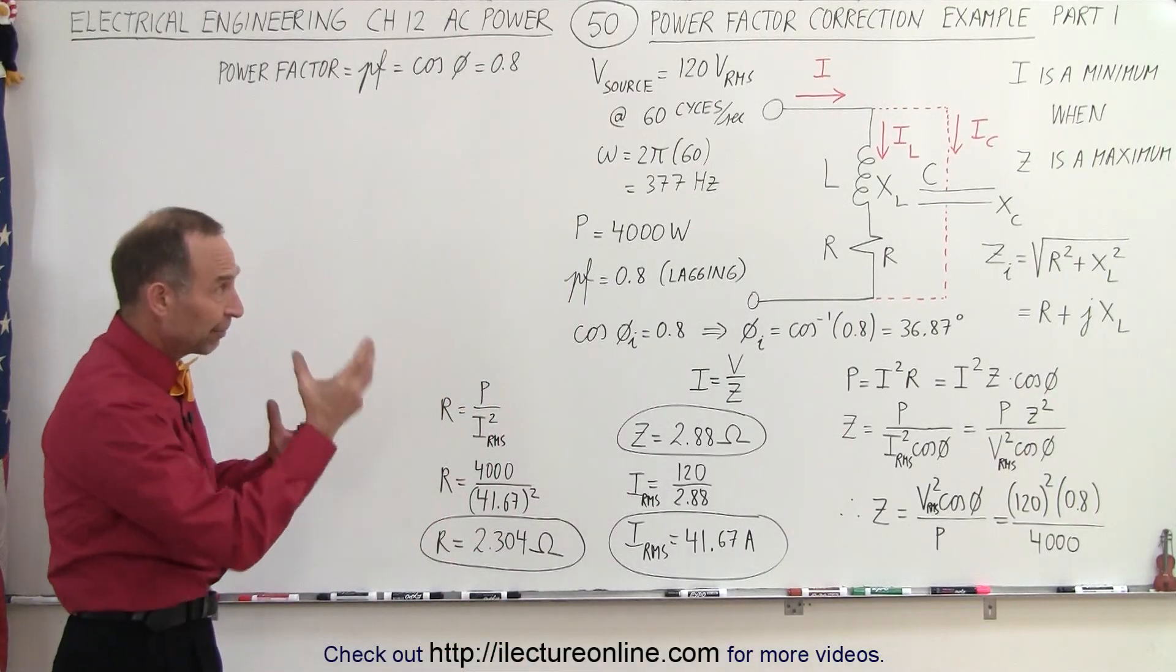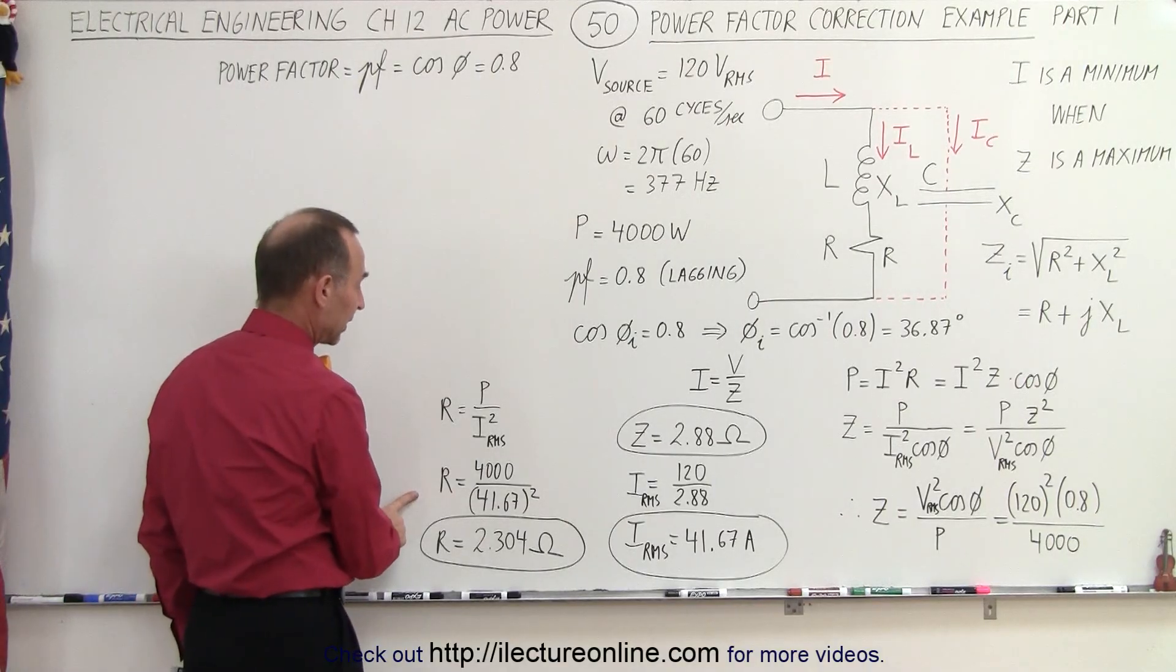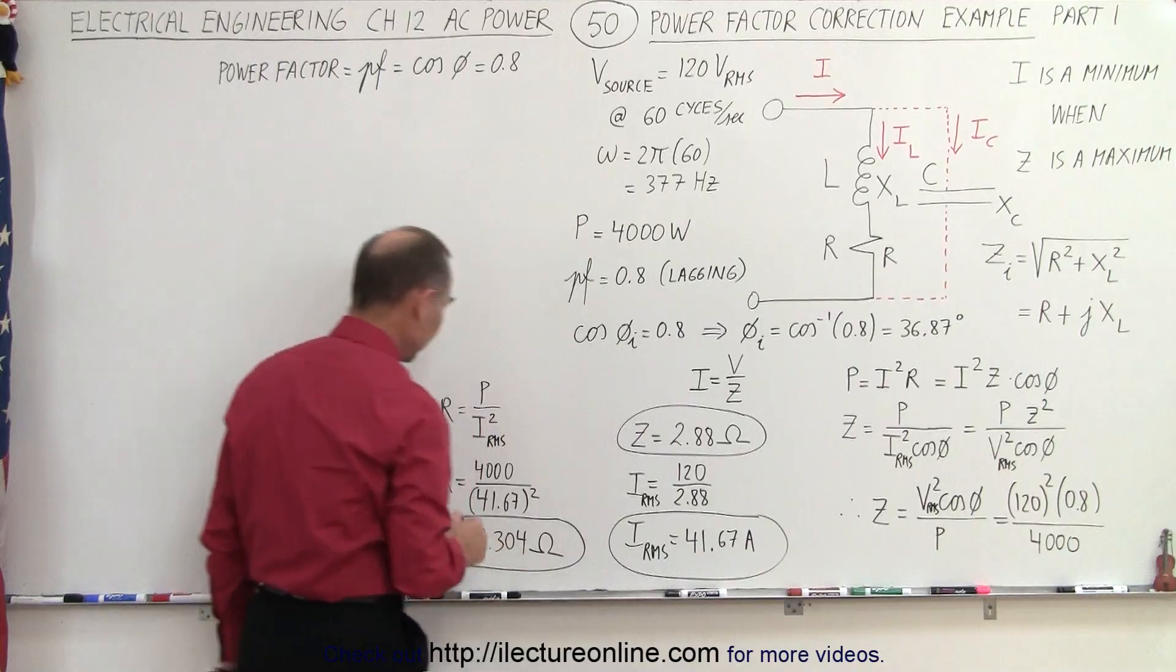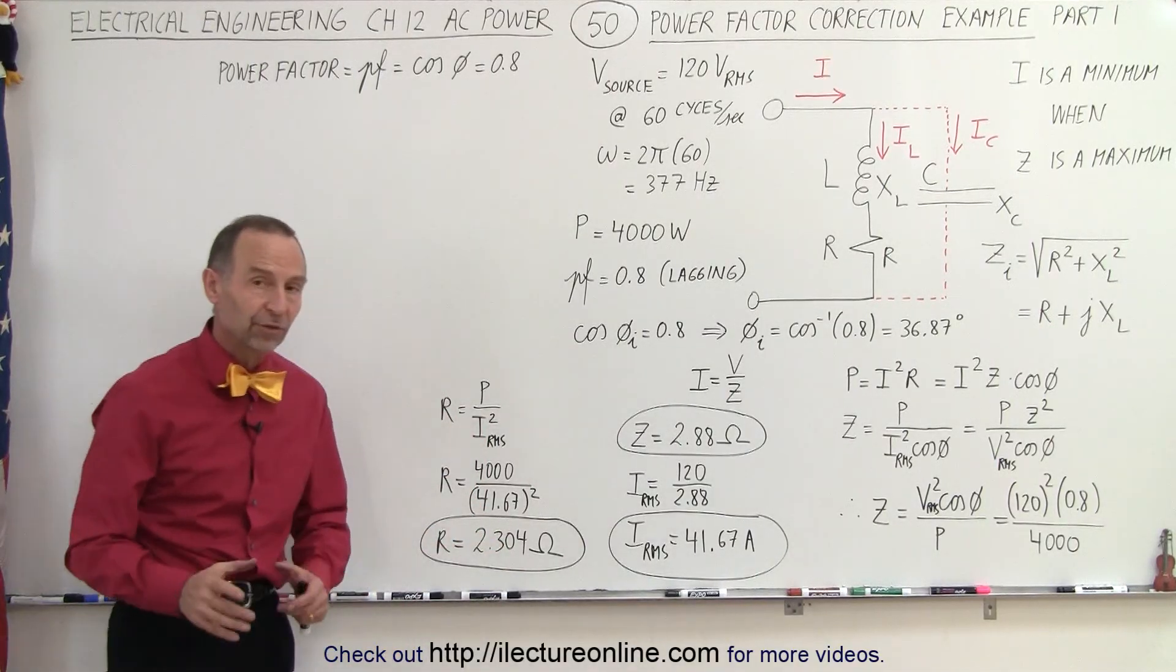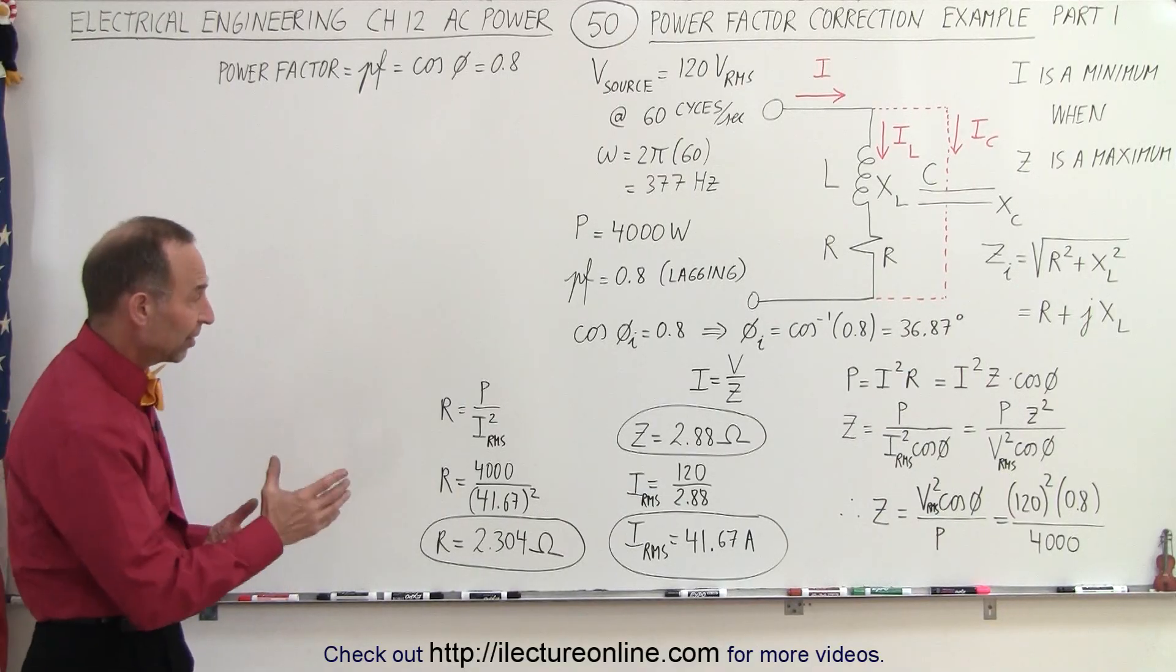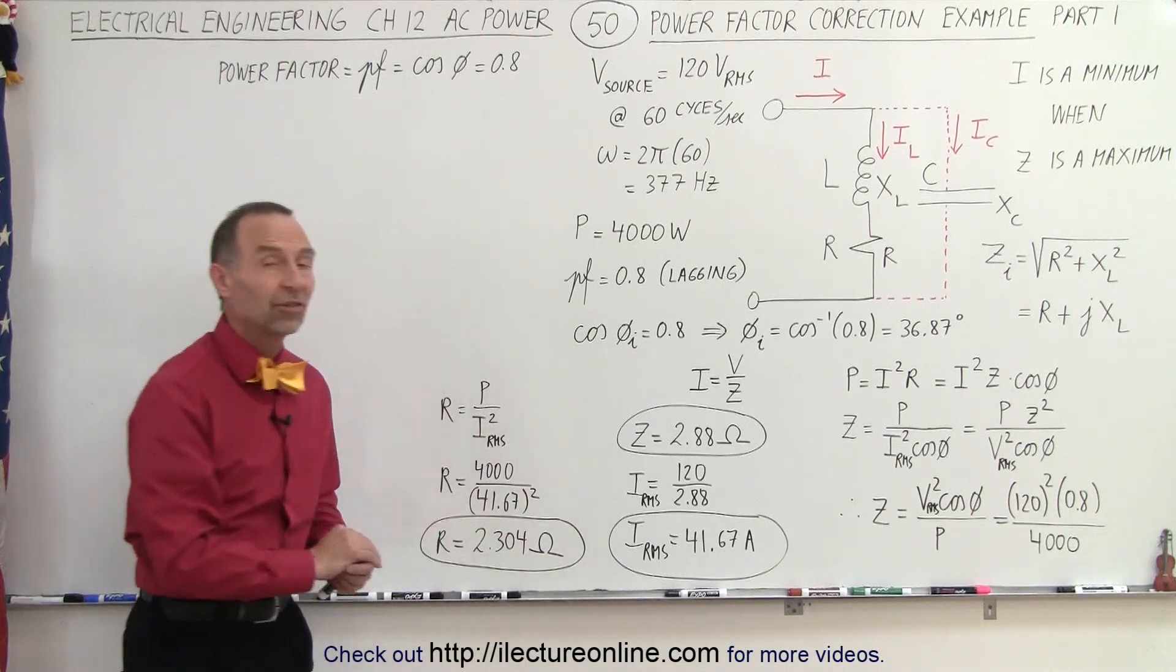And then finally, the resistance in the circuit can be calculated by taking the power divided by I squared. So the power divided by I squared gives us 2.304 ohms for the resistance. So at least before we add a capacitor, we can see that we can calculate the impedance, the current, and the resistance in the circuit.